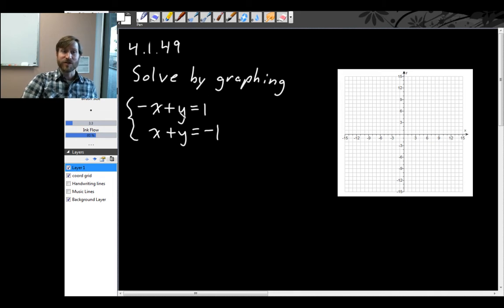Since we need to graph both of these lines, that's easiest to do if we have them both in slope-intercept form. Remember putting a linear equation in slope-intercept form is just a matter of solving for y. So we need to isolate this y here. In this first equation, just add x to both sides, and you get y equals x plus 1.